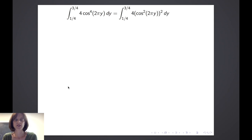Let's consider the definite integral from 1 fourth to 3 fourths of 4 cosine of 2 pi y raised to the fourth power dy, which we can equivalently rewrite as the definite integral from 1 fourth to 3 fourths of 4 times the cosine of 2 pi y squared quantity squared dy.